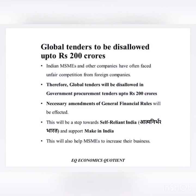The final measure is about global tenders. The government issues tenders for procurement of goods and services, and mostly foreign companies get the benefit of those tenders. Therefore, global tenders will be disallowed in government procurements up to 200 crores. This is an important step towards self-reliant India and supports the Make in India project. It will also help MSMEs to increase their business.